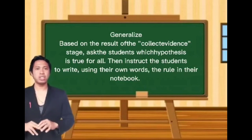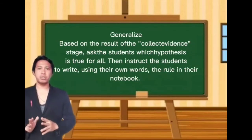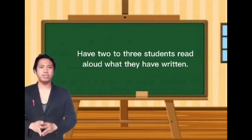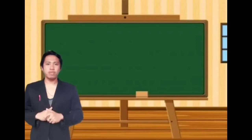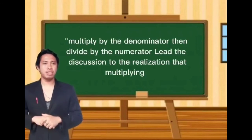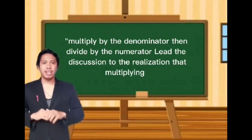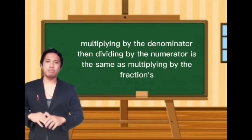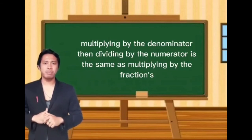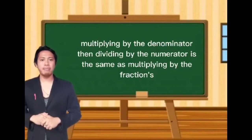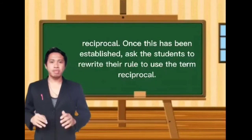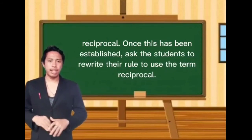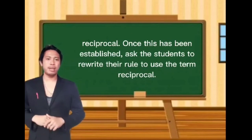For the generalize stage, based on the results of the collected evidence, ask students which hypothesis is true for all. Instruct students to write the rule in their own words in their notebooks, then have two to three students read aloud what they have written. Most students will write 'multiply by the denominator then divide by the numerator.' Lead the discussion to the realization that multiplying by the denominator and then dividing by the numerator is the same as multiplying by the reciprocal. Once established, ask students to rewrite their rule using the term 'reciprocal.'